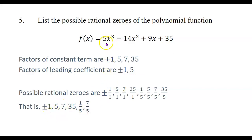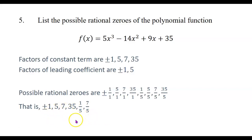Any rational number that is a zero of that polynomial must appear on this list, so we can rule out numbers like 2, 3, or one-half. We can't rule out irrational zeros like square roots, or complex zeros involving i — those wouldn't appear on this list. But any rational zero, whether a whole number or fraction, positive or negative, must be one of the values on the list.